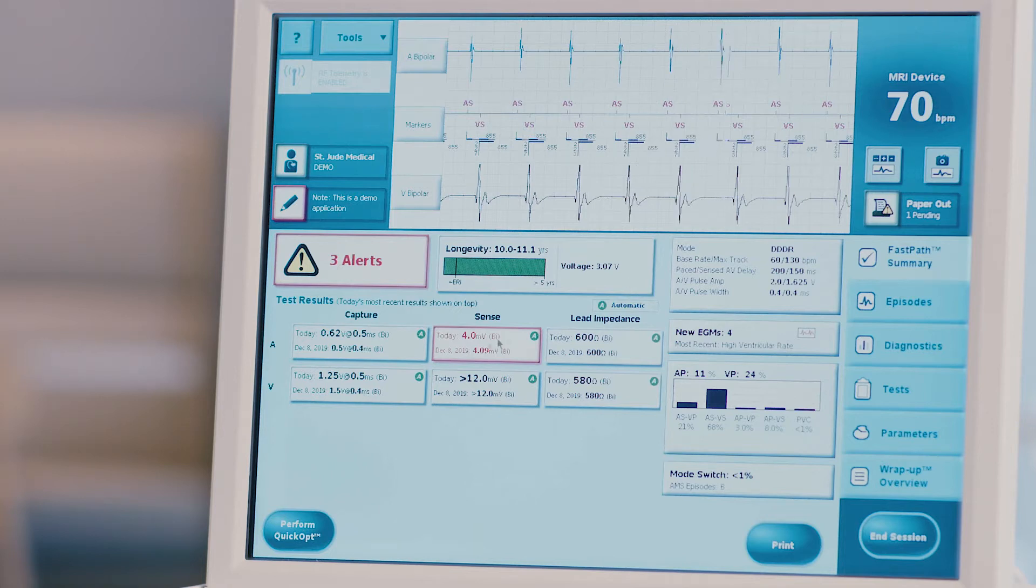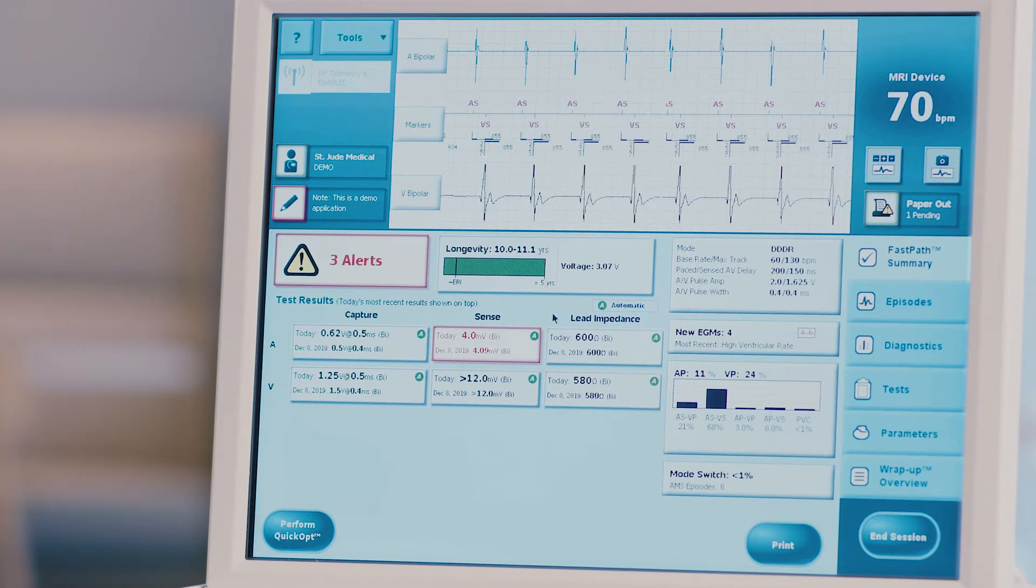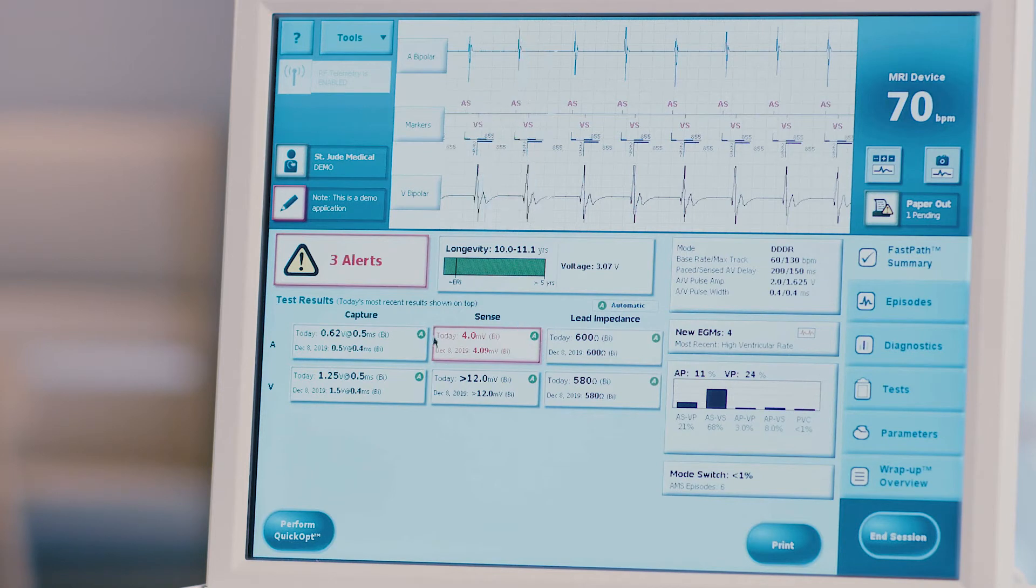Evaluate the automatic test results, denoted by the presence of a green A in the measurement box, measured by the device upon interrogation. Note that any box outlined in red either does not meet the safety margin or is outside the acceptable measurement range.